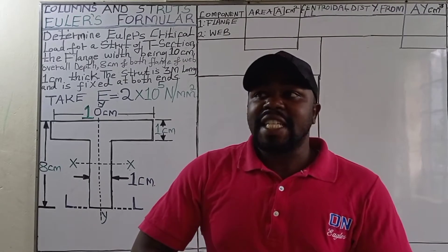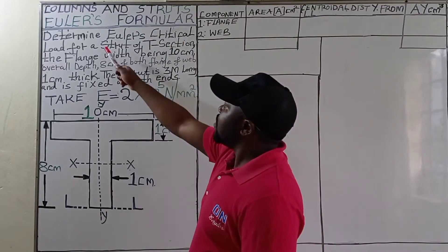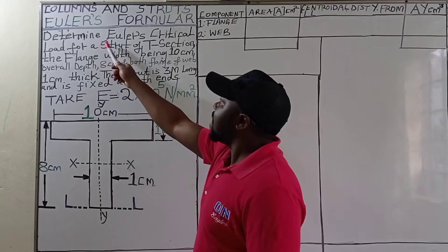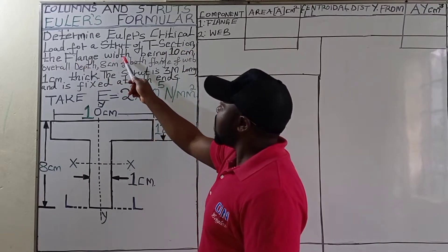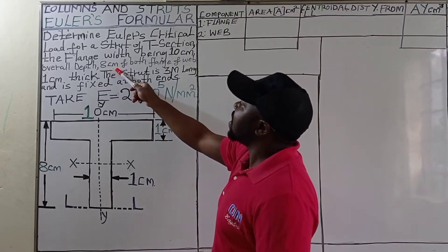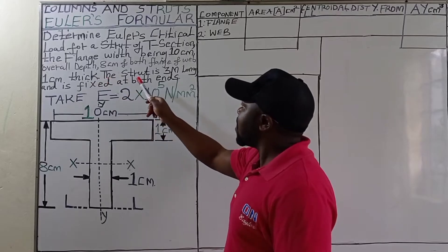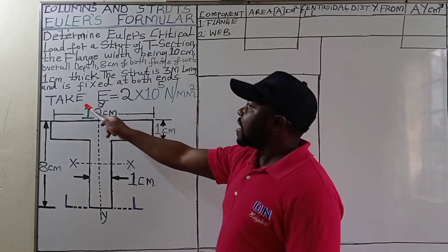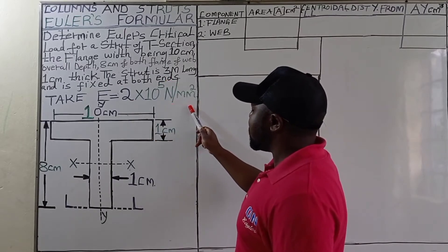Hello guys, this is George Kamiti. Welcome back to our channel. We are still analyzing columns and struts using Euler's formula. The question of today says: determine Euler's critical load for a strut of T-section. The flange width is 10 centimeters, the overall depth of the column is 8 centimeters, and both flange and web are 1 centimeter thick. The strut is 3 meters long and is fixed at both ends. Take the modulus of elasticity to be 2 × 10⁵ N/mm².